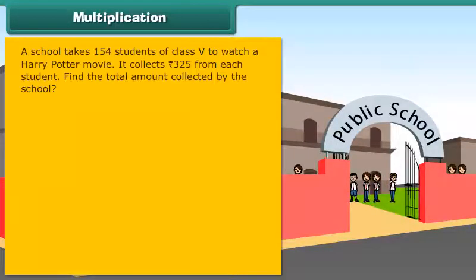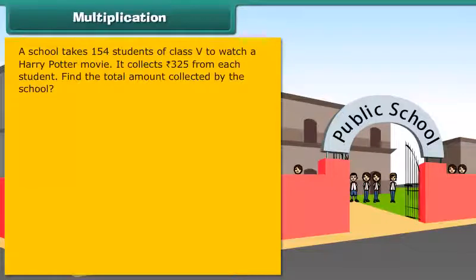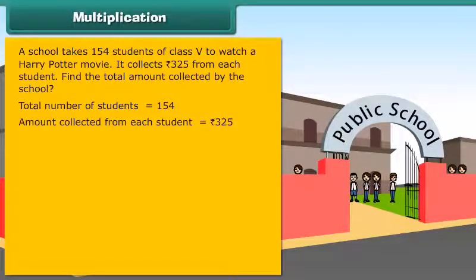A school takes 154 students of class 5th to watch a Harry Potter movie. It collects Rs. 325 from each student. Find the total amount collected by the school. Total number of students is equal to 154. Amount collected from each student is equal to Rs. 325.